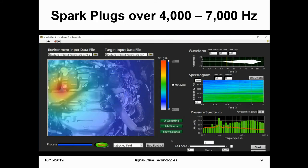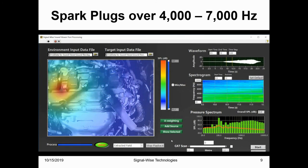Shown here is the sound pressure level distribution in the target area over the frequency range of 4000 to 7000 Hz. This time, we can see not only the engine spark plugs noise but also the engine ignition sequence.